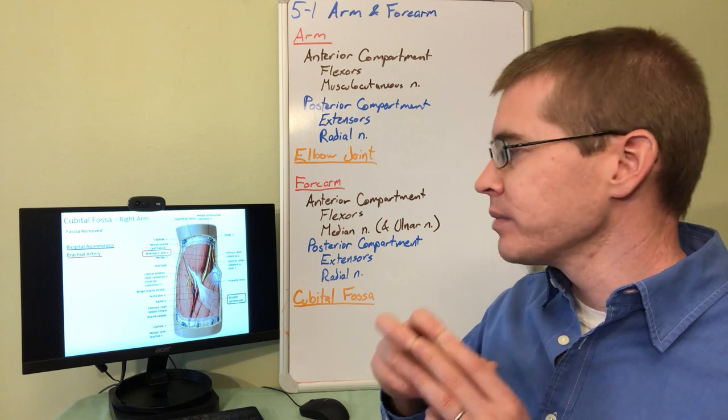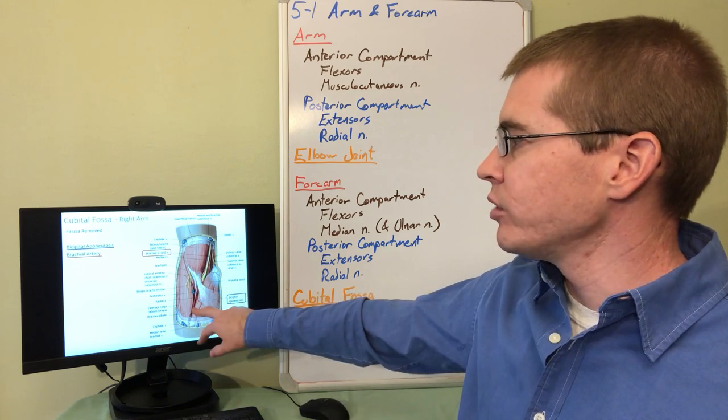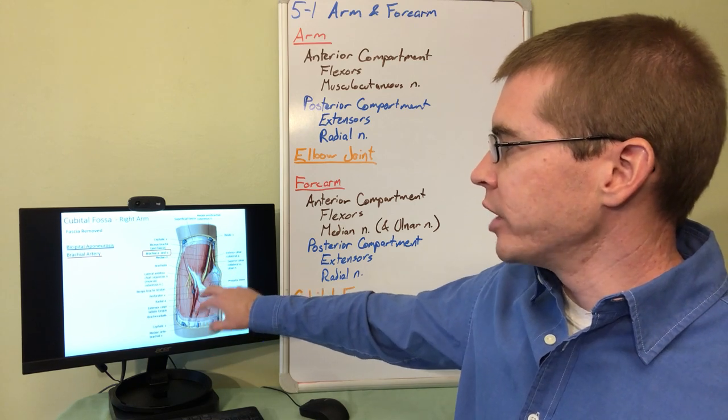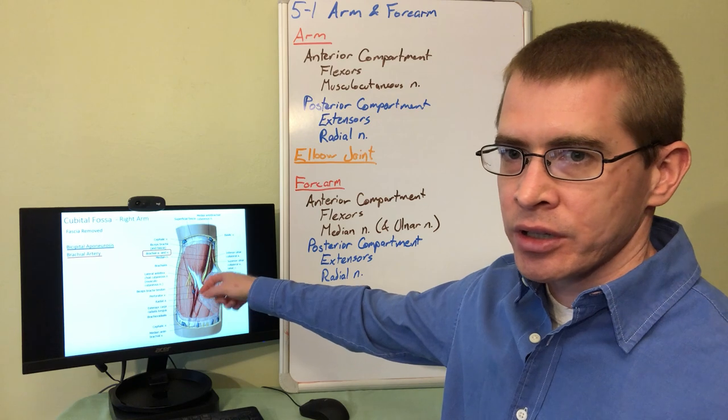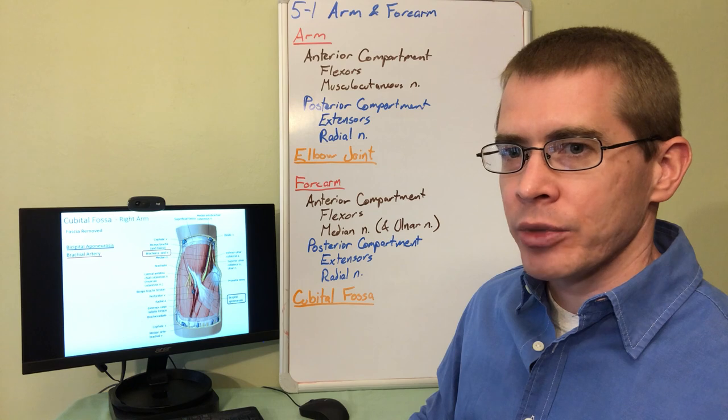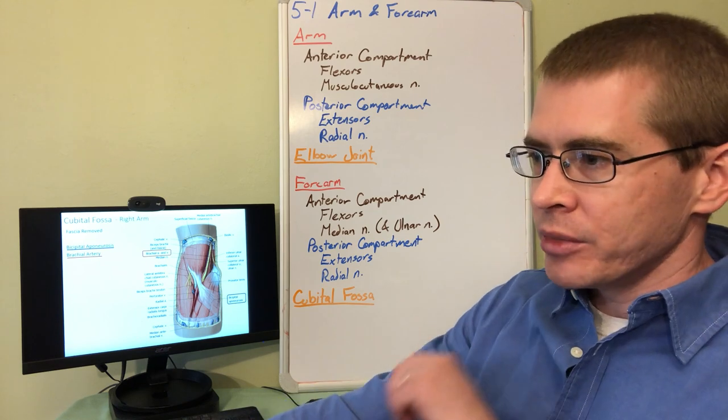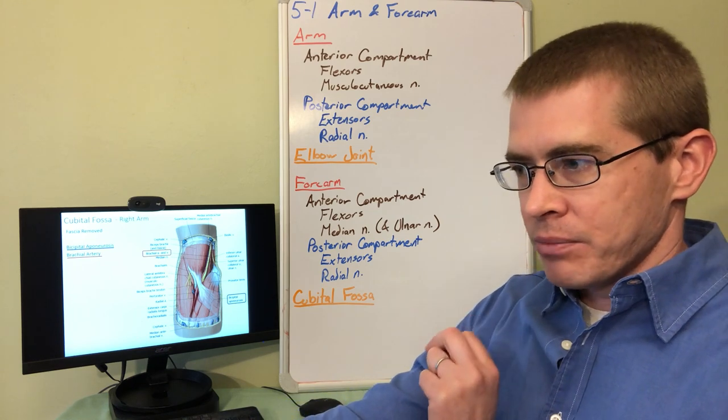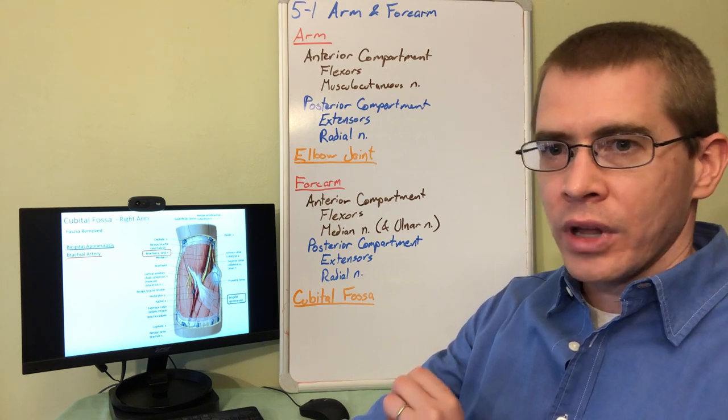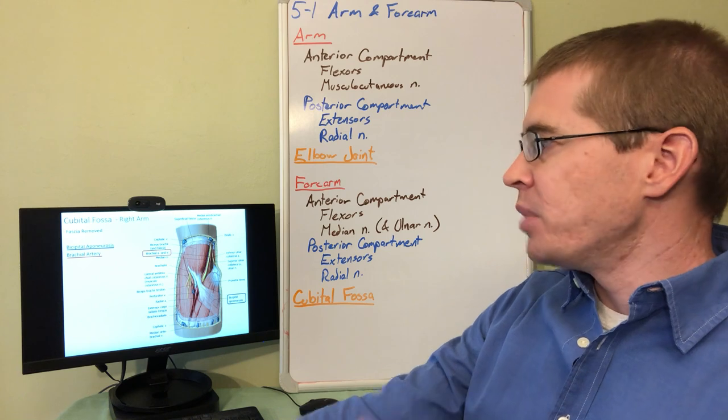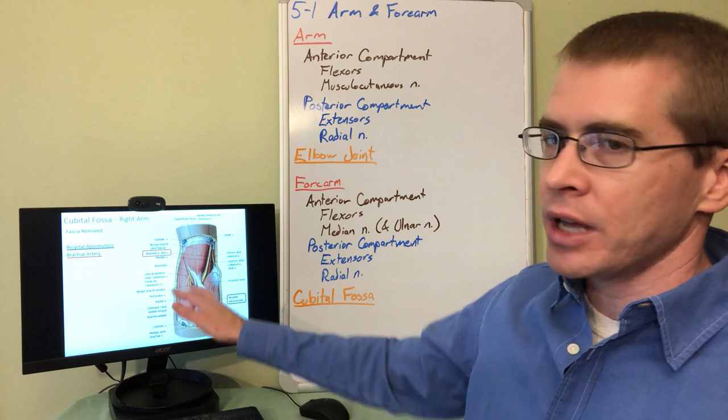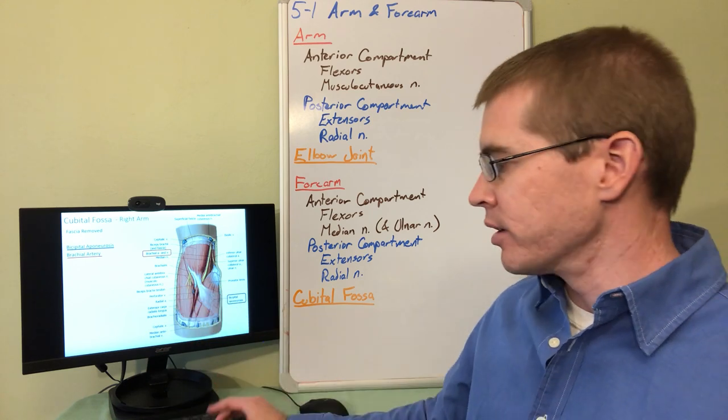So as that brachial artery travels through this region of the anterior arm to the forearm it travels deep to the bicipital aponeurosis. So a phlebotomist if they puncture through the median cubital vein have a very low likelihood or chance of puncturing into the artery the brachial artery that's deep to the bicipital aponeurosis because that aponeurosis shields that artery.